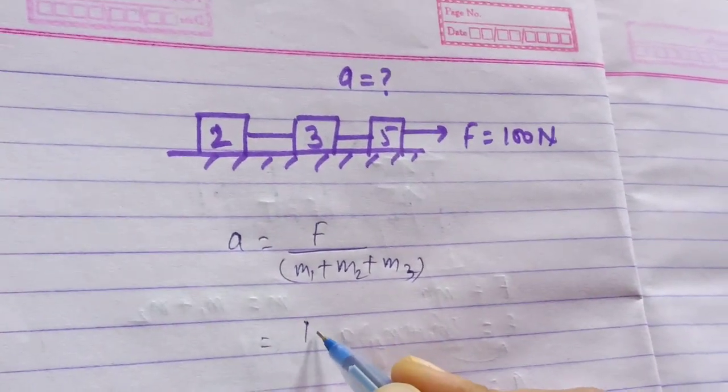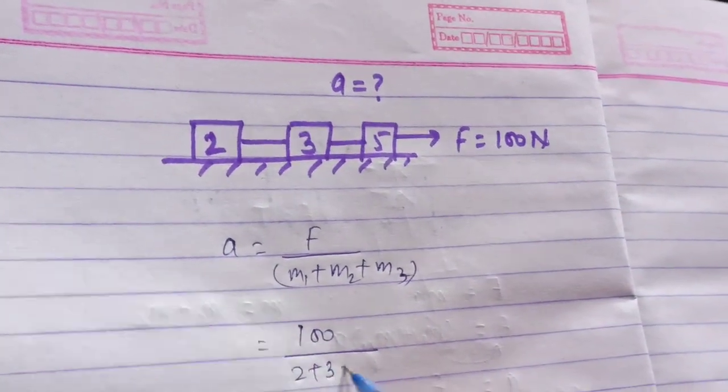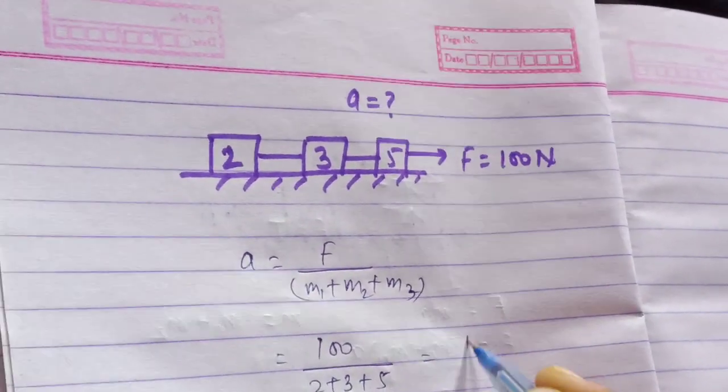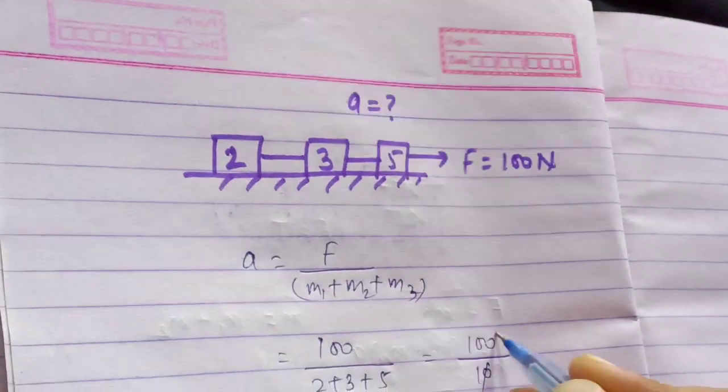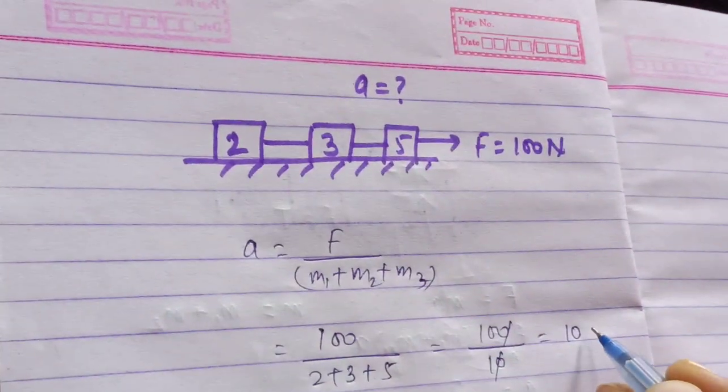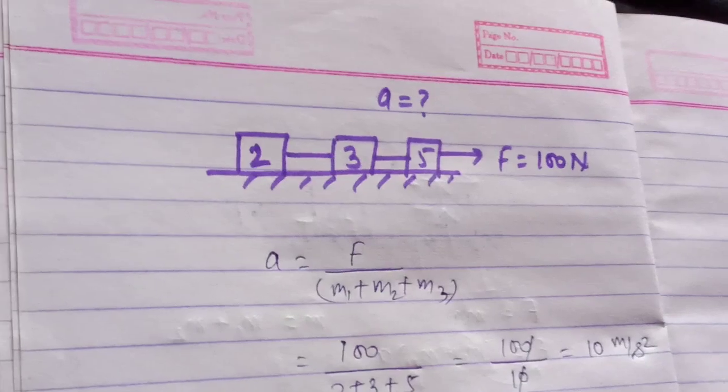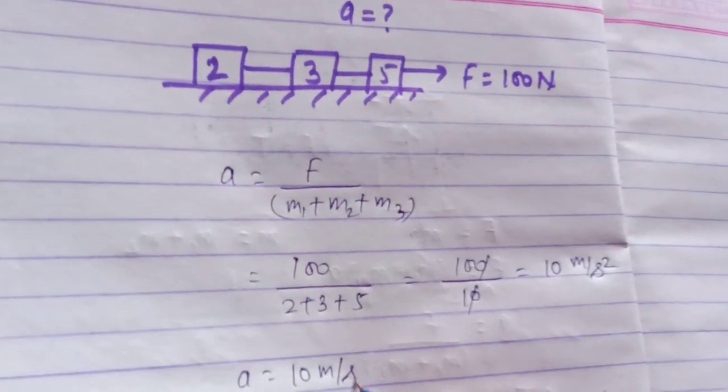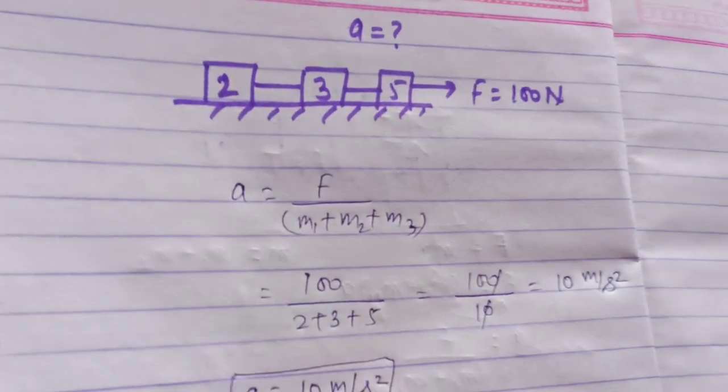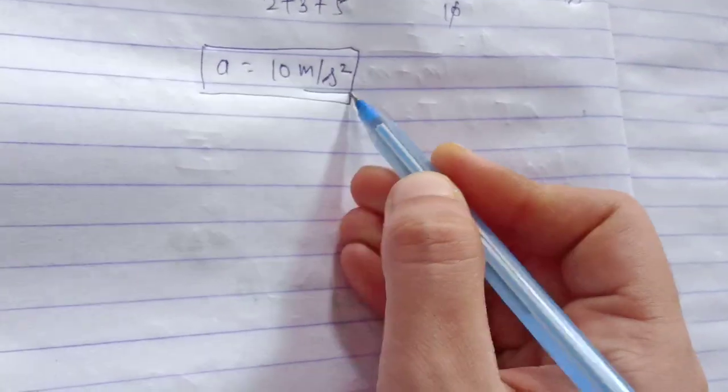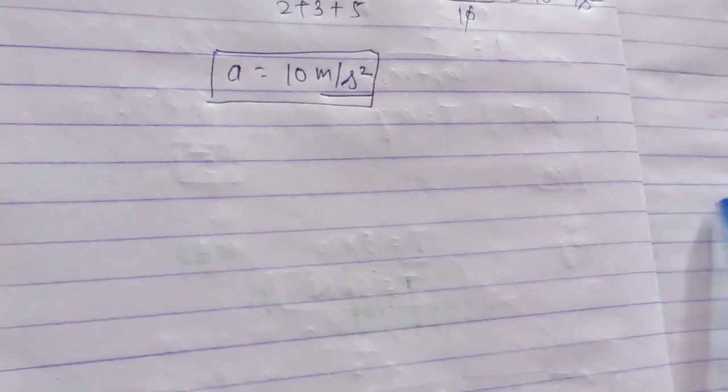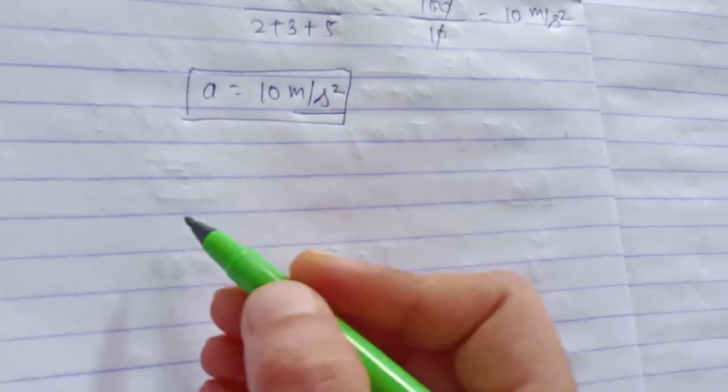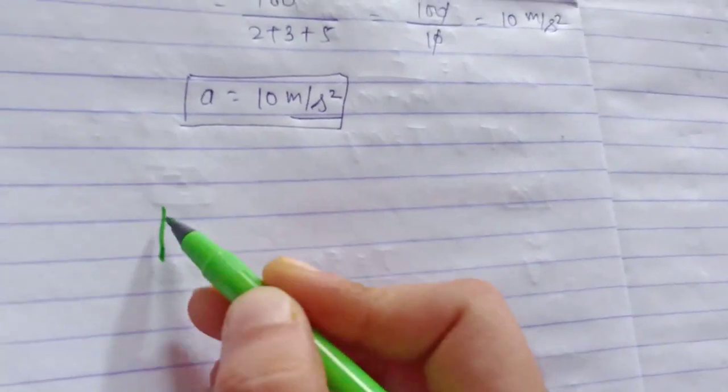F is 100, and 2 plus 3 plus 5 equals 10, so 100 divided by 10 equals 10. The acceleration is 10 meters per second squared. You know the unit of acceleration is meters per second squared. Now we will discuss another example of five blocks.